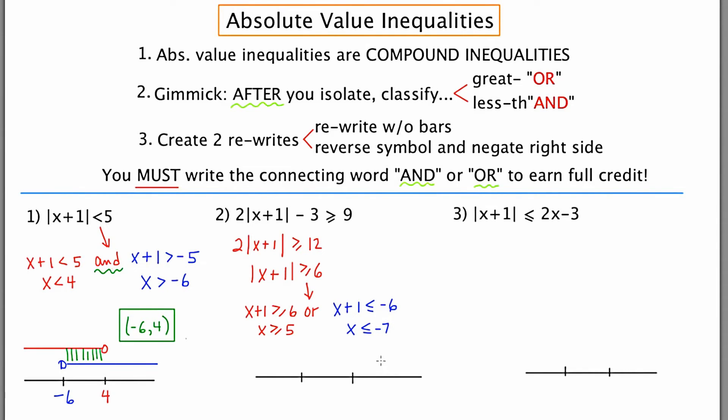I'll now graph these on the number line. Because this is an or problem I'm going to look for the presence of any shading. There's shading to the left in blue. There's shading to the right in red. And the solution is going to be negative infinity to negative seven, union five to infinity.